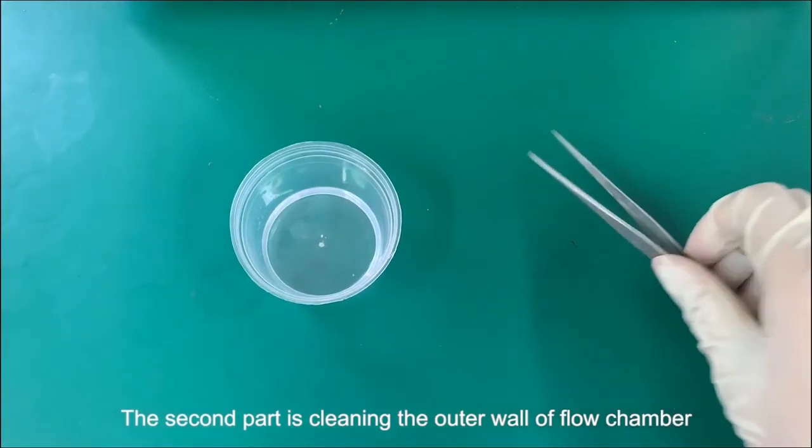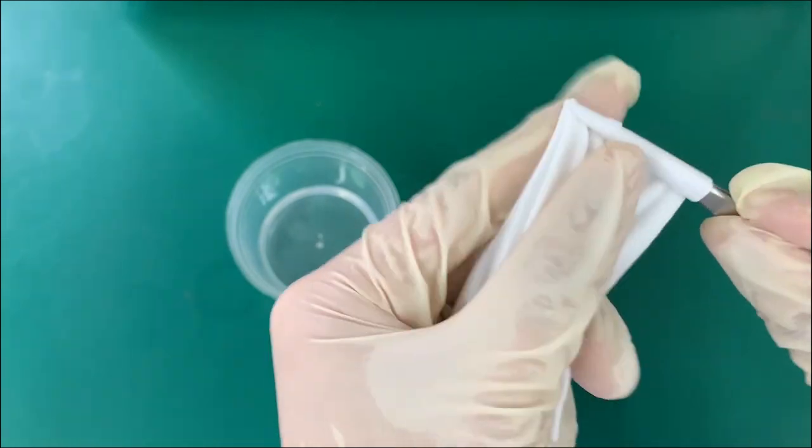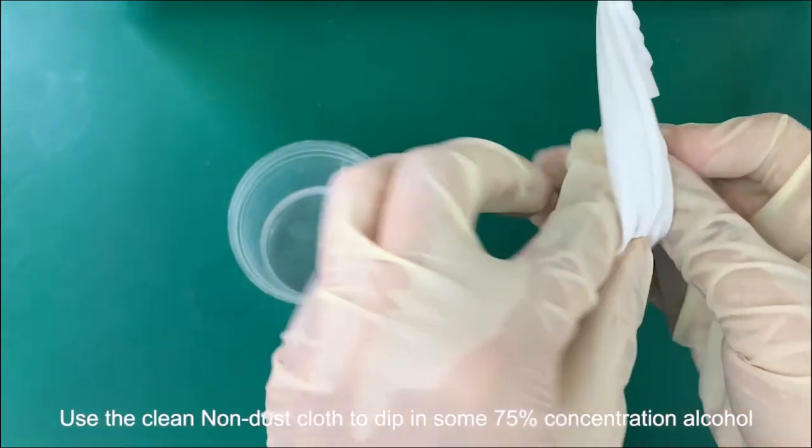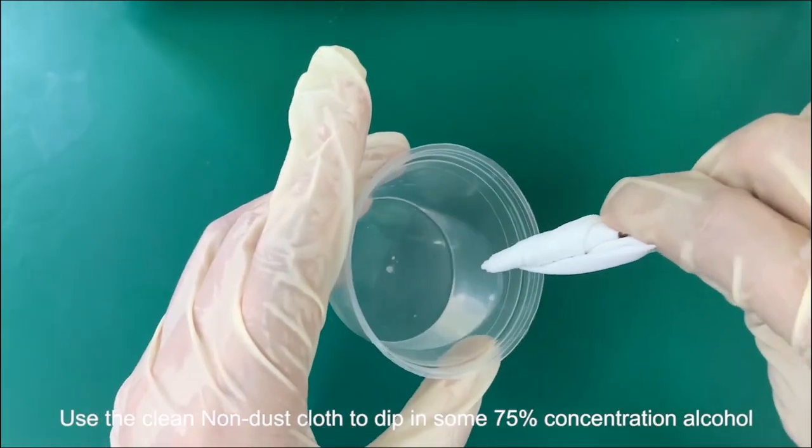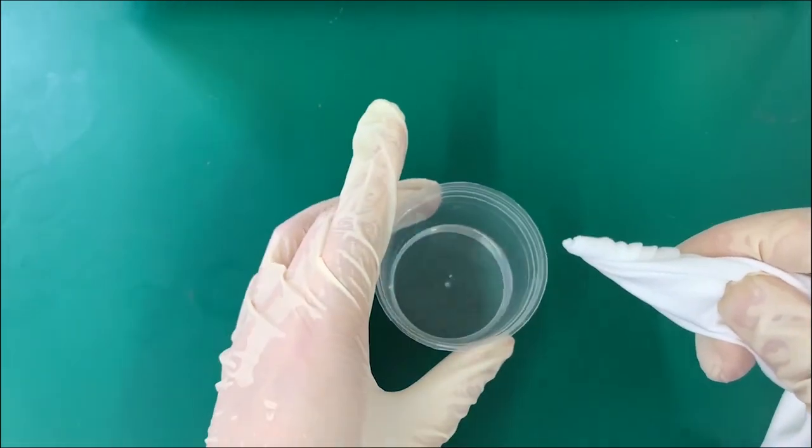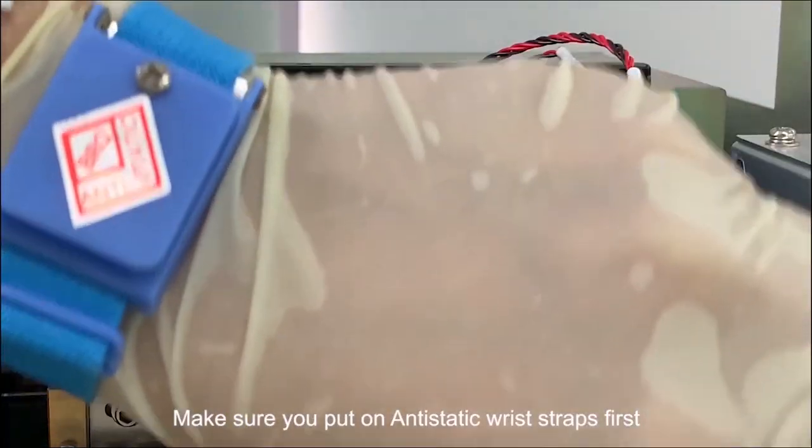The second part is cleaning the outer wall of the flow chamber. Use a clean non-dust cloth to dip in some 75% concentration alcohol. Make sure you put on anti-static wrist straps first.